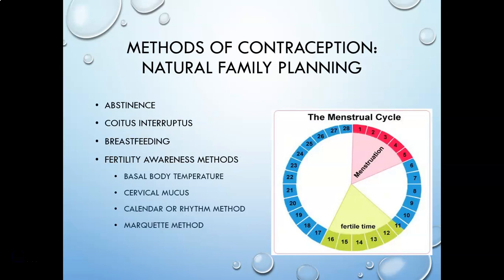First, we'll talk about natural family planning. This involves methods of self-assessment of a woman's physical characteristics to determine when she is ovulating. She'll use those fertility awareness methods to determine avoidance of intercourse during those fertile periods. Abstinence is the only method that is 100% effective — all other methods of contraception have some degree of ineffectiveness.